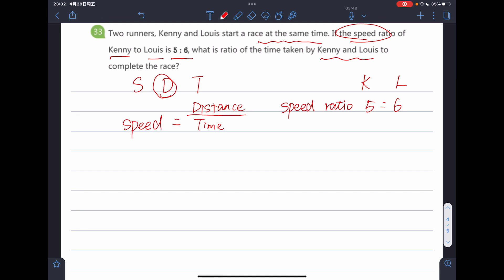And since they cover the same distance, the time they take to complete the race will be inversely proportional to their speeds. So that means Kenny's time to Lewis' time is equal to Lewis' speed to Kenny's speed. Right?